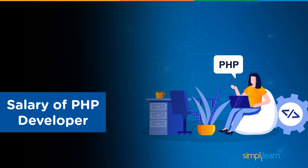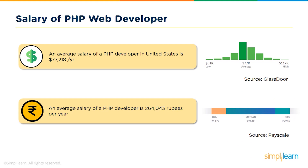Moving on to the salary of a PHP developer, PHP developer jobs pay well and offer great opportunities for growth. From Glassdoor reports, we found a PHP developer's salary to be an average of $77,218 annually, while a PHP developer in India earns an average salary of Rs 2,64,043 per year, according to Payscale.